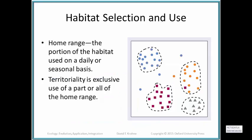Organisms select and use their habitat in basically two main ways. One is through a home range, which is the portion of the habitat used on a daily or seasonal basis — the place where they roam to get their food, water, mates, hiding places, and nesting places. It's a home range.